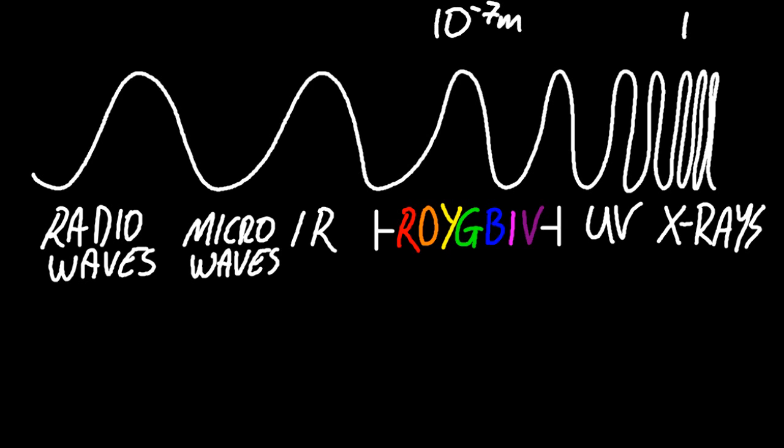Just a few extra details. Visible light is around 10 to the minus 7 metres from peak to peak, the wavelength. X-rays 10 to the minus 10, so the wavelengths are smaller there. Infrared is in the order of millimetres, microwaves in the order of centimetres, and radio waves we're looking at kilometres long.